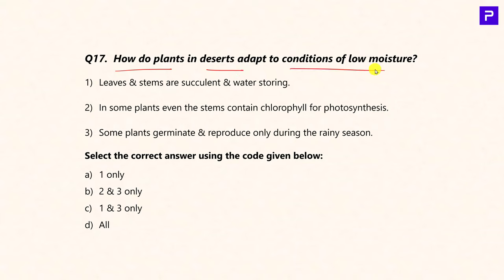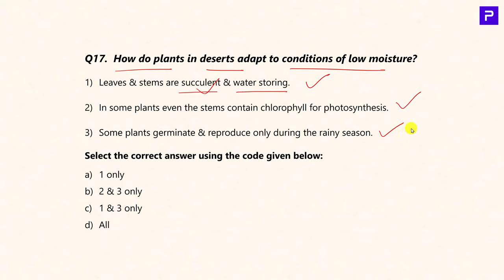Question 14: How do plants in the desert adapt to conditions of low moisture? Leaves and stems are succulent and water-storing (True). In some plants, even stems contain chlorophyll for photosynthesis when there are no leaves (True). Some plants germinate and reproduce only during the rainy season — seeds are protected under a thick layer and remain dormant until the wet season arrives (True). The answer is all of the above.